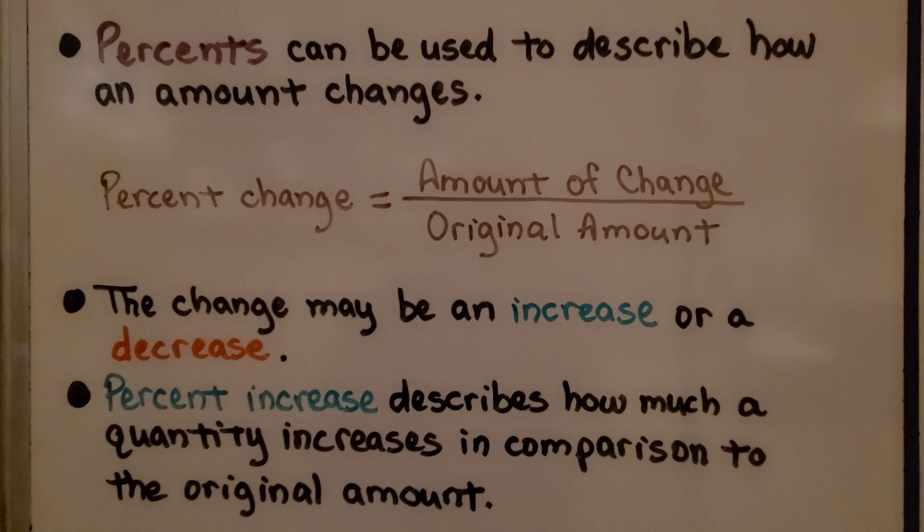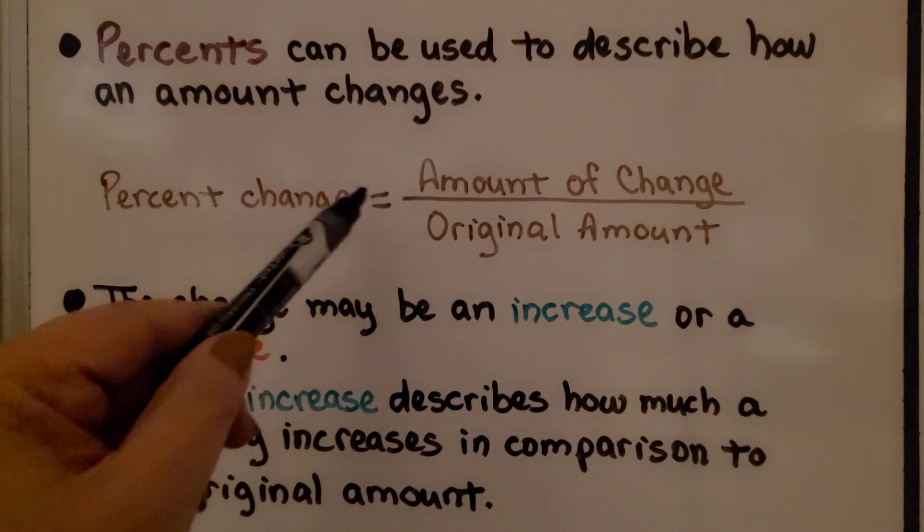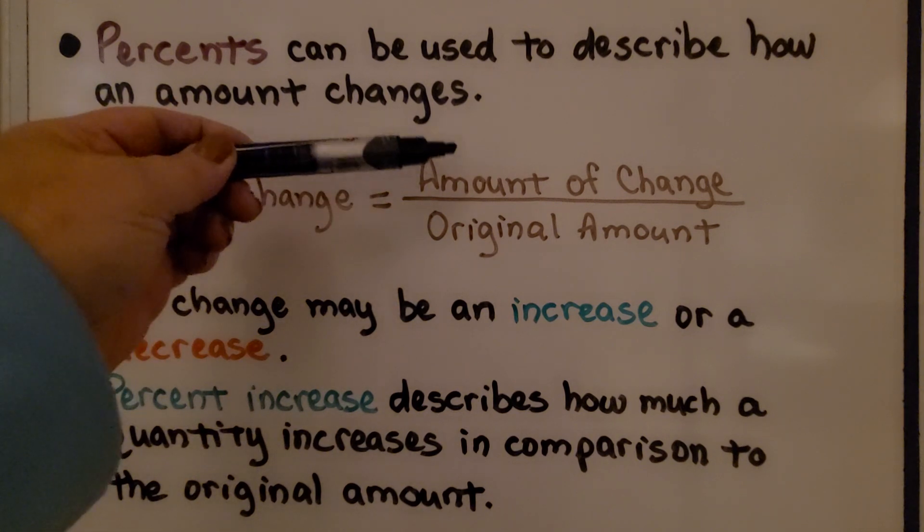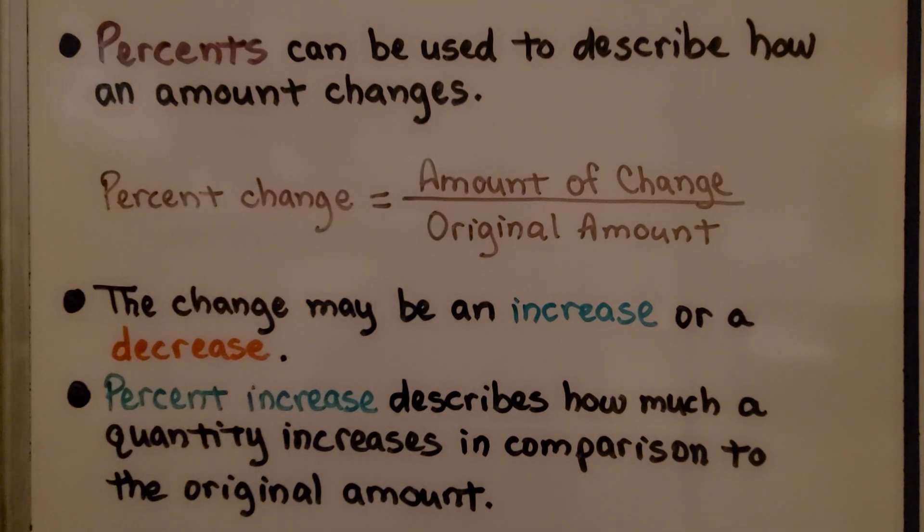Percents can be used to describe how an amount changes. We have the percent change, and that's equal to the amount of change divided by the original amount. The change may be an increase or a decrease. Percent increase describes how much a quantity increases in comparison to the original amount.